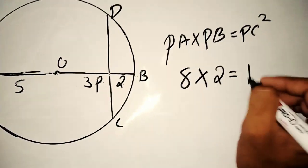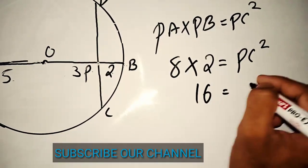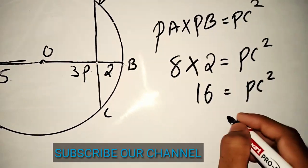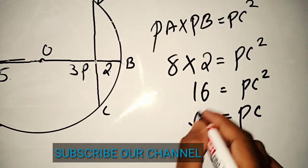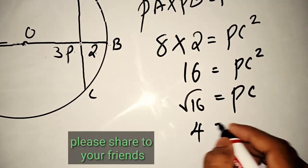9 or 12, 14, this is PC square. Then PC is root 16. If we look at the square root of 16, then root 16 is 4. Then PC is 4.